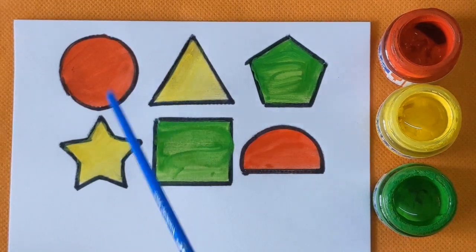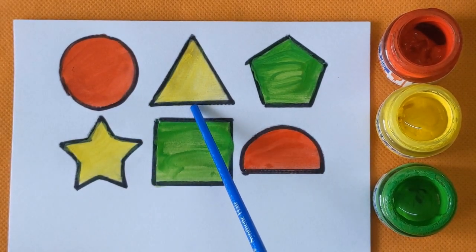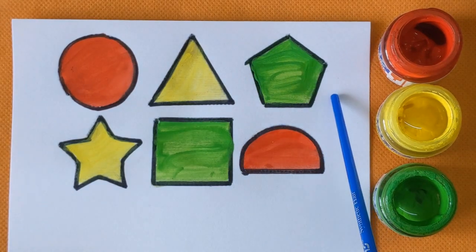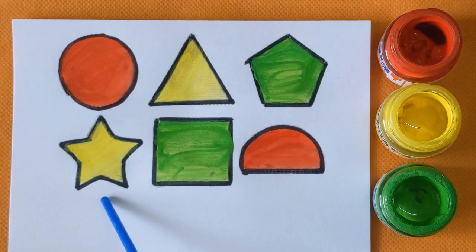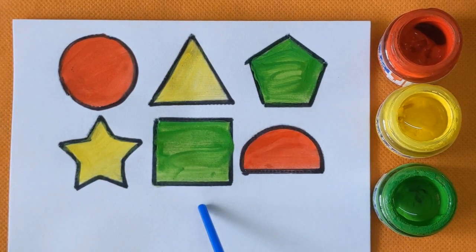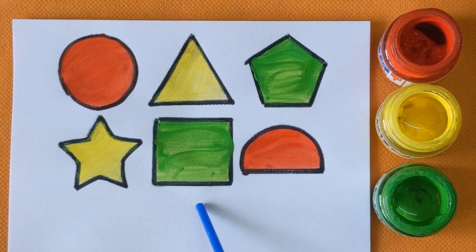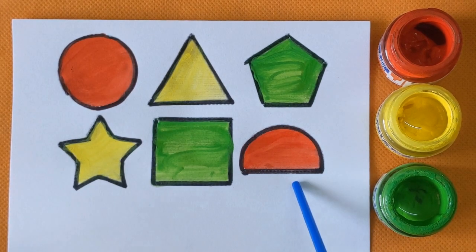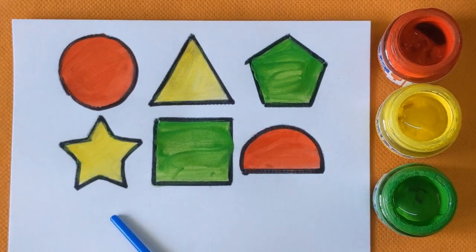Triangle, triangle, triangle, yellow color. Pentagon with a green color. Star, yellow color. It's a square with a green color and semicircle with a red color.